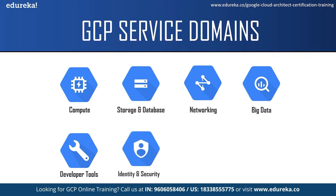The next service is GCP IAM. With IAM, you can manage access control by defining who has what access for which resources. It lets administrators authorize who can take actions on specific resources, giving you full control and visibility to manage Google Cloud resources.